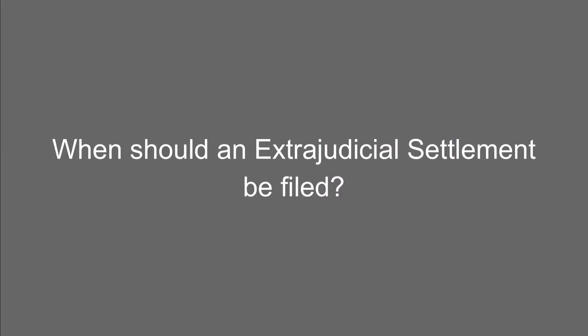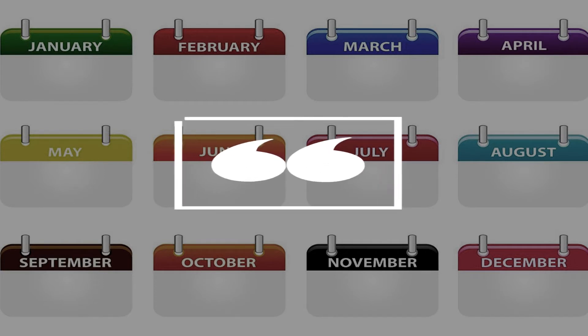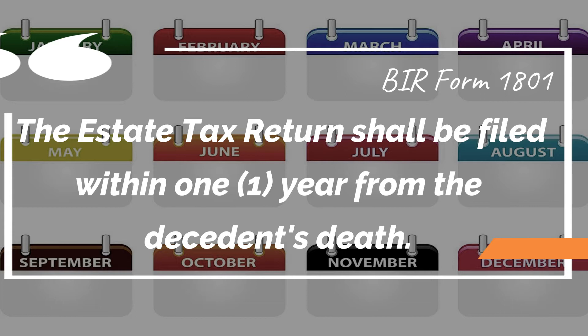Is there a time limit, attorney, on filling out an extrajudicial settlement for the children? There is no time limit in that you can do it any time after the person passed away, but there are practical reasons why you should do it earlier rather than later. Under our law there is one year within which you should settle the estate and pay the taxes.